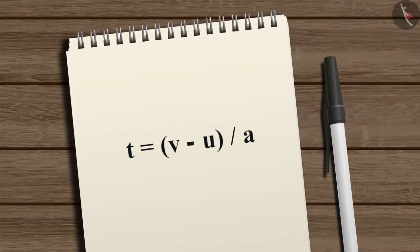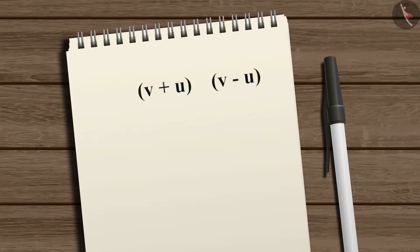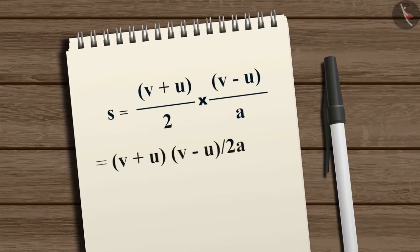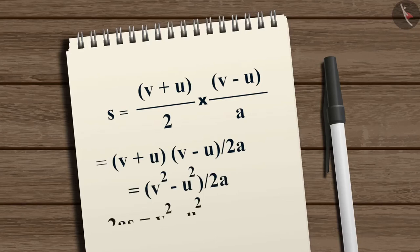From the velocity-time relation we know t = (v - u) / a. Using this value of t, the distance becomes s = (v + u) / 2 × (v - u) / a = (u + v)(v - u) / 2a = (v² - u²) / 2a. Therefore, 2as = v² - u².